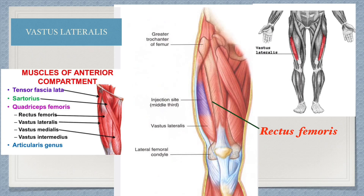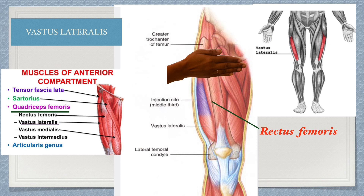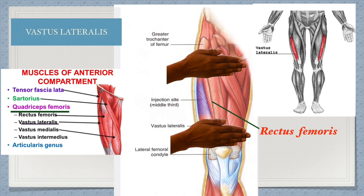Next is the vastus lateralis, which is the most common site for IM injection. It is one of the muscles of the quadriceps femoris group of the anterior thigh. To locate the vastus lateralis site, palpate the greater trochanter and take a hand-width below it. The bottom border will be a hand-width above the knee, and the side borders vary from the mid-anterior thigh to the mid-lateral thigh.